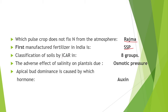The first manufactured fertilizer in India is SSP — Single Super Phosphate. Classification of soil by ICAR is in 8 groups. Out of 8, 5 are major, which are alluvial soil, black soil, red soil, laterite soil and desert soil. The adverse effect of salinity on plants is due to osmotic pressure.